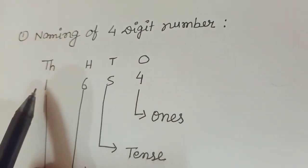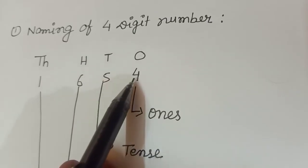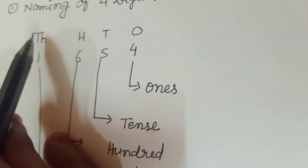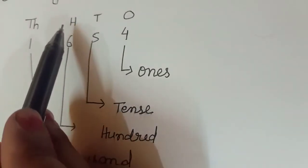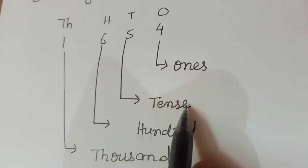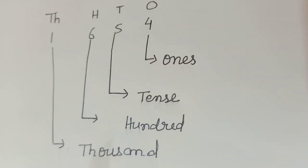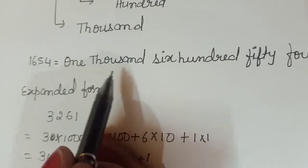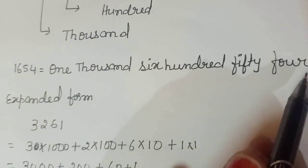Suppose, we are taking a number 1, 6, 5, 4. We put it in place value table. Now, 1 is in place of 1000, 6 is in place of 100, 5 is in place of 10s, 4 is in place of 1s. Now, number's name is 1,654.